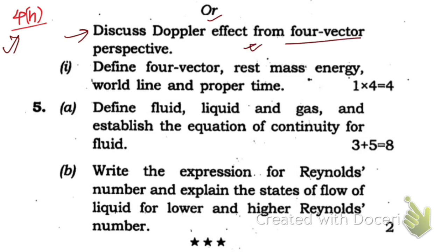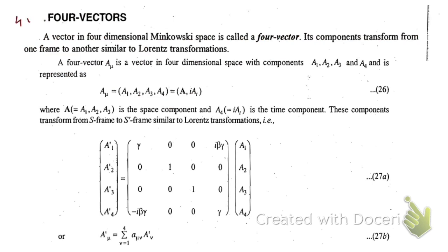I have already made a video on the Doppler effect topic — the link is in the description box, go and watch. Now, question number 4h is written and I've provided the link. Next, let's define four-vector. A four-vector is a vector in four-dimensional Minkowski space. Its components transform from one frame to another similar to the Lorentz transformation.